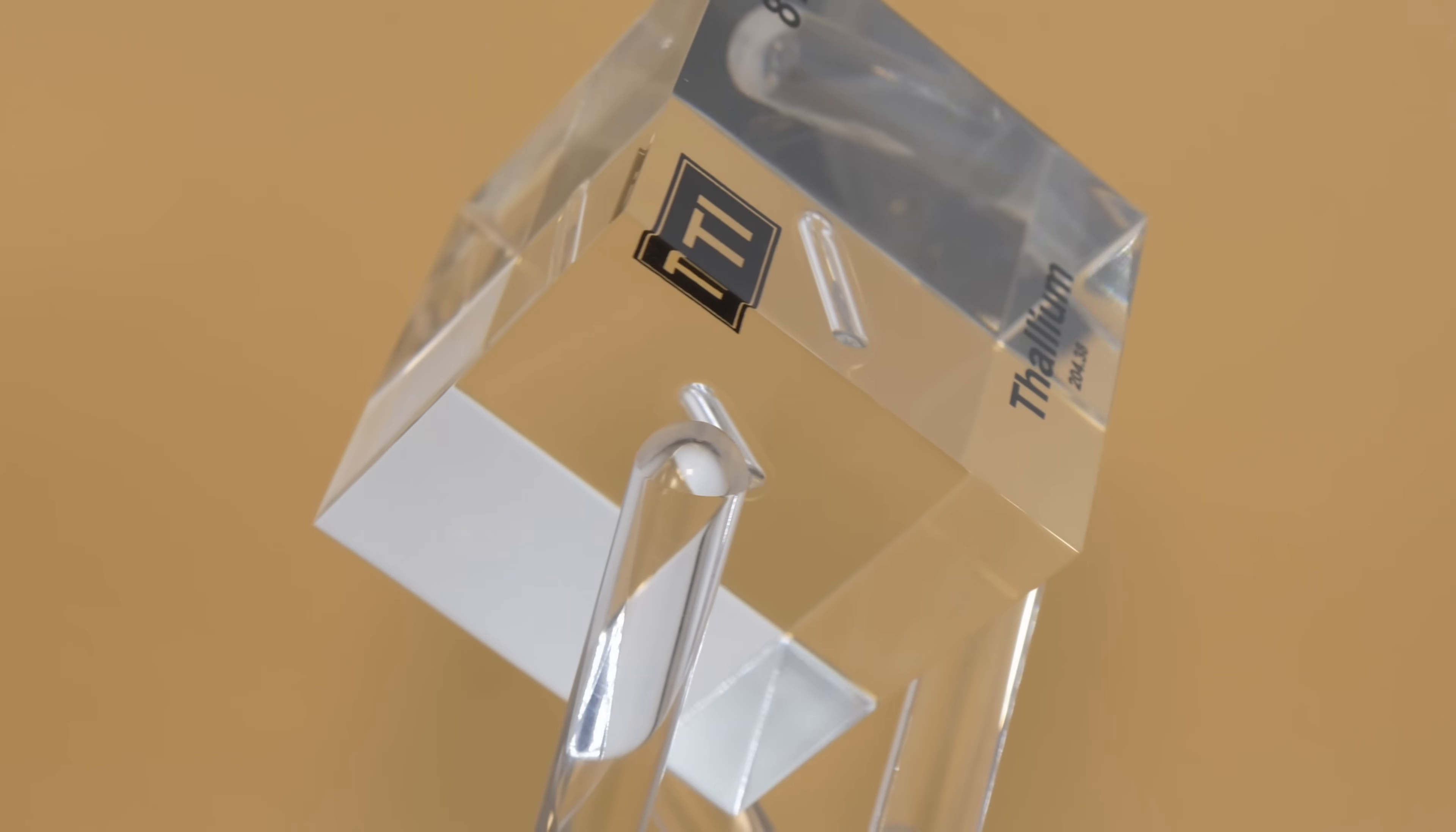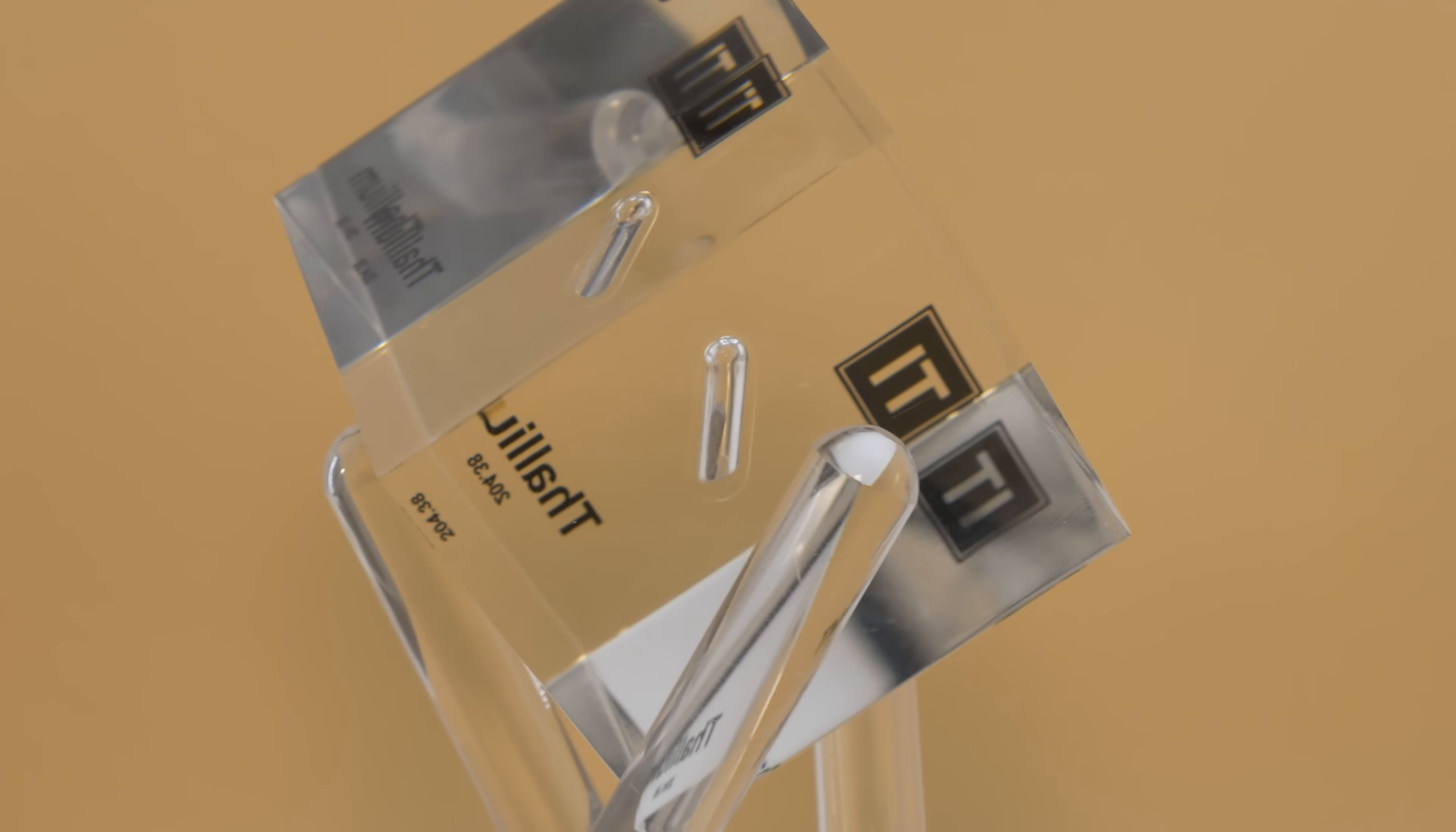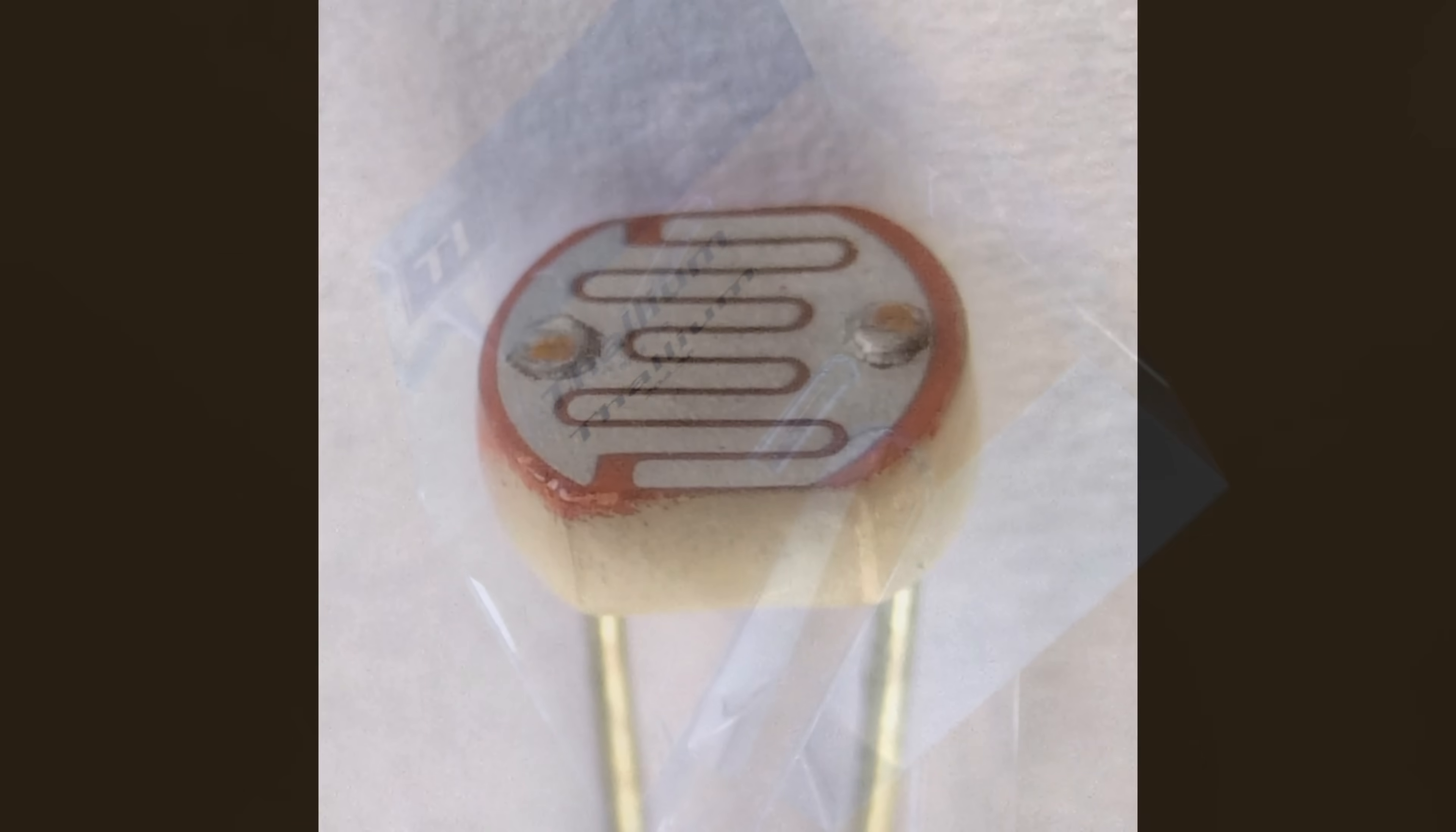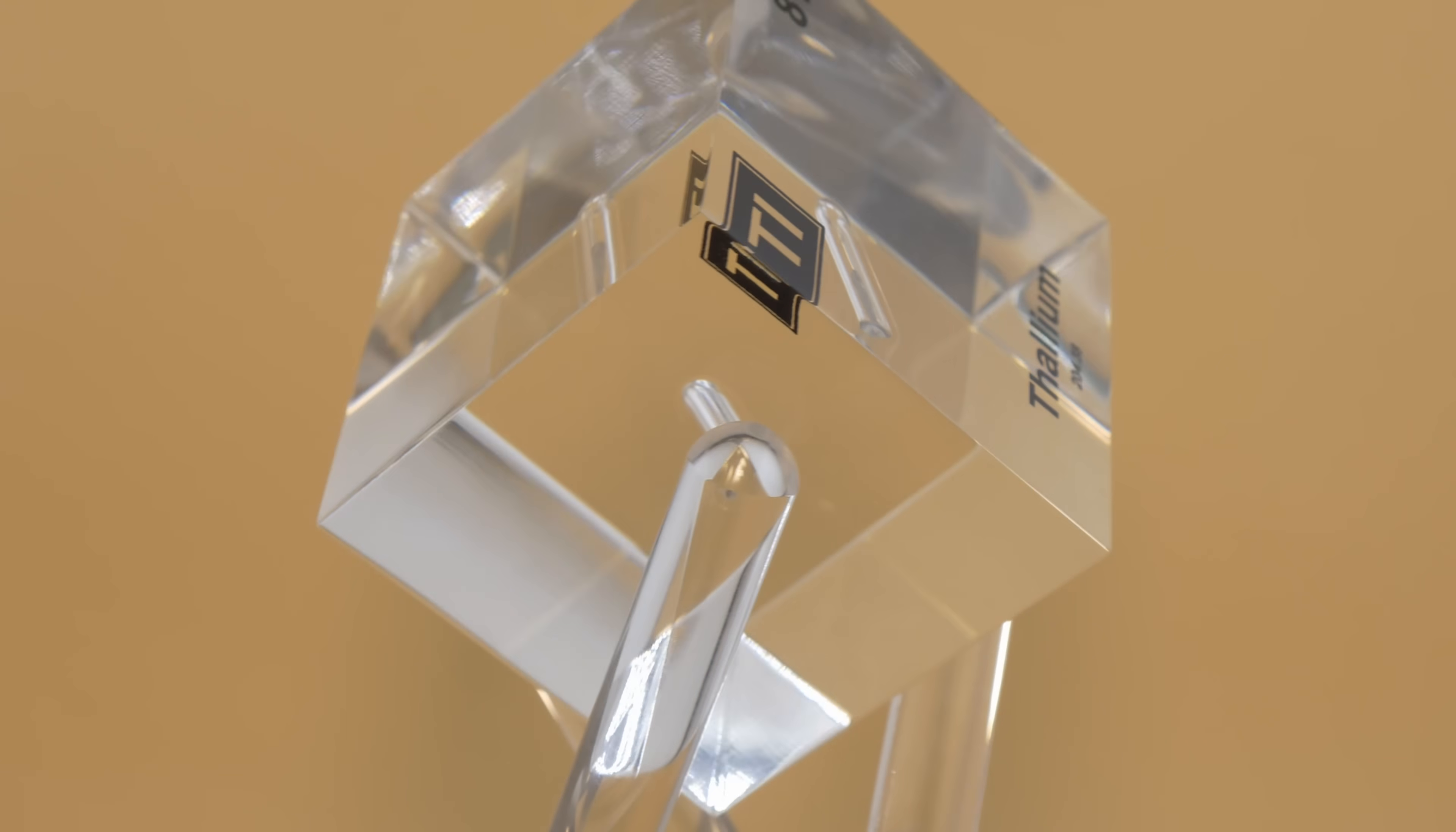Thallium's ability to conduct electricity and respond to infrared light made it useful in electronics. For instance, thallium sulfide is a semiconductor material that changes its electrical resistance when exposed to infrared radiation. This property led to its use in photoresistors and motion detectors in the past. Thallium selenite was similarly used in infrared detection equipment like bolometers, devices that measure heat radiation. These uses have become less common with newer technologies, but they were important in the mid-20th century.